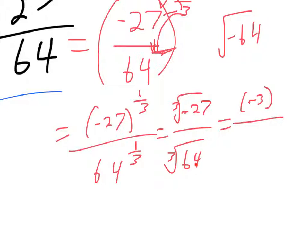And then cube root of 64, what am I thinking here? Oh, 4, right? 4 times 4 is 16, 16 times 4 makes 64. So this is it. Our final answer is that whole thing simplifies to this.